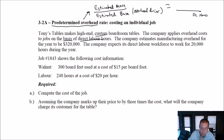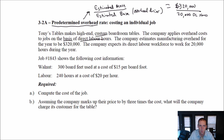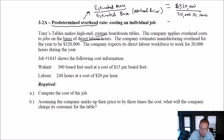The company estimates manufacturing overhead for the year to be $320,000. And the company expects its direct labor workforce to work for 20,000 hours. You would know this if you're running a company — you'd say, okay, I have seven employees, they work 40 hours a week, 50 weeks a year, this is how many direct labor hours we're going to work. You could determine your estimated MOH by thinking of all those overhead costs and budgeting them. Real companies can and do this. So we do the math and we get $16 per direct labor hour.